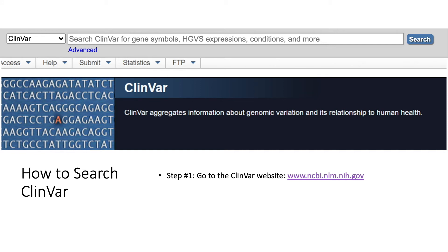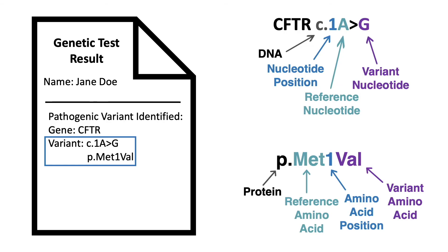You will need to have your variant ready to search. To find your variant, look at your genetic test result. The genetic change is listed under the variant heading. Variants are usually written in a format beginning with 'c.' followed by a combination of letters and numbers — this tells us what part of the DNA sequence has been altered. In this example, we are talking about letter one in the CFTR gene. The first letter, A in this example, is what letter people typically have at that position.